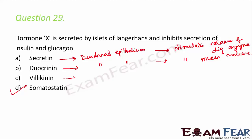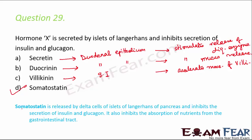Villikinin is secreted by the small intestine — the name hints at the villi — and it accelerates the movement of villi for better absorption. Somatostatin is released by the delta cells of the islets of Langerhans of the pancreas, inhibits secretion of insulin and glucagon, and also inhibits absorption of nutrients from the gastrointestinal tract.